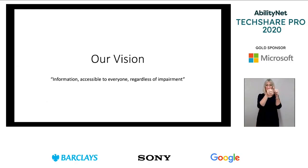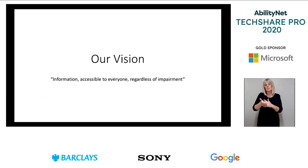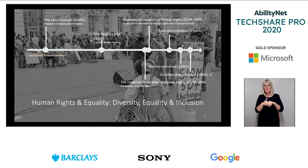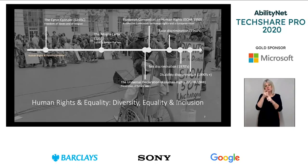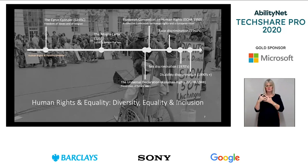Our vision is to make information accessible to everyone, regardless of impairment. Let's talk about the social history and disability rights. In talking about accessible information, it's important to understand its place in social history and the current laws and regulation driving adoption of accessible technologies.